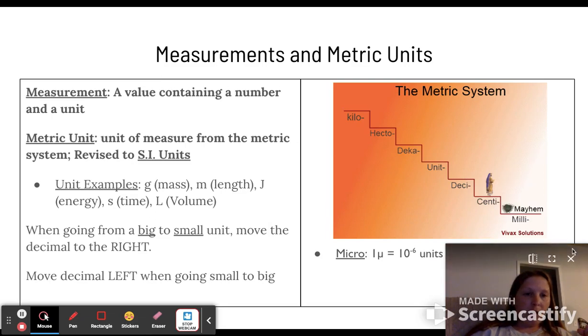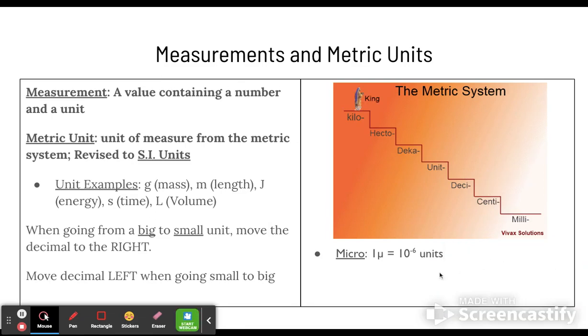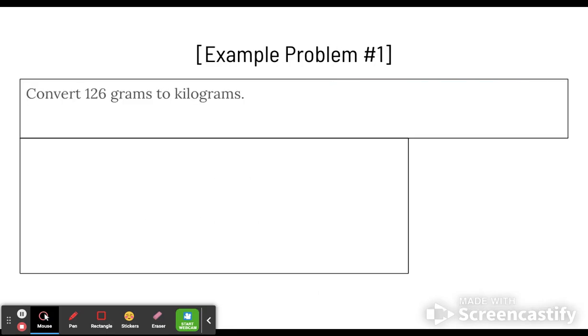Some other units here that are not on your basic prefix scale are micro, which would be 10 to the negative 6th base units, nano, which is 10 to the negative 9th base units, and pico, which is 10 to the negative 12th base units. Those are just good to have as reference whenever we get into those kind of measurements.